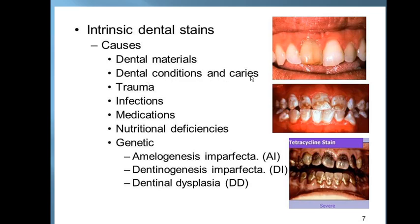Trauma — a hit to the tooth — can cause discoloration. Infection will also cause discoloration of the tooth. Medication like tetracycline and nutrition deficiency may also cause teeth discoloration, leading to intrinsic dental stains. Finally, genetic factors play a role as well.